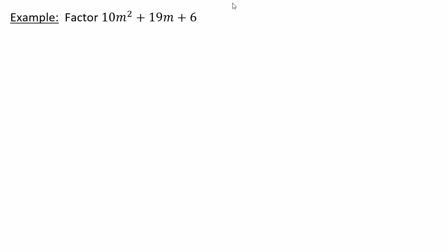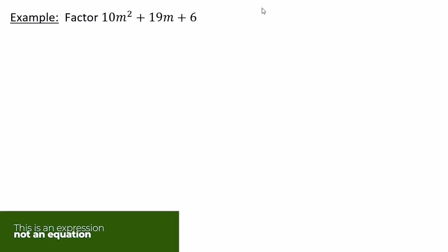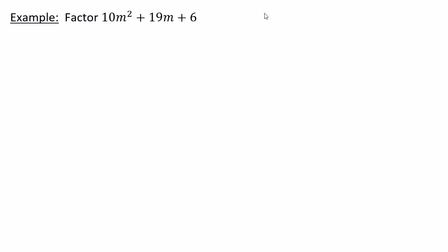There are some disadvantages to the trial and error method. Here we're asked to factor the expression 10m² + 19m + 6, and I don't have a leading coefficient of 1 — my leading coefficient is 10. I could factor that as 1 × 10 or 2 × 5. And I have to think about factoring 6, which could be 1 × 6 or 2 × 3.